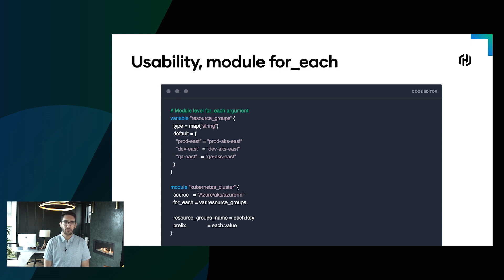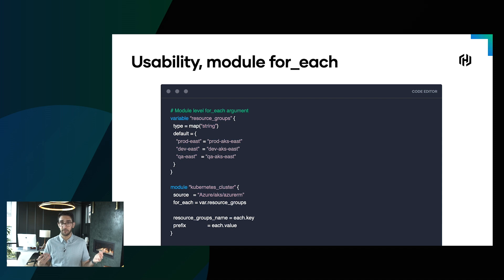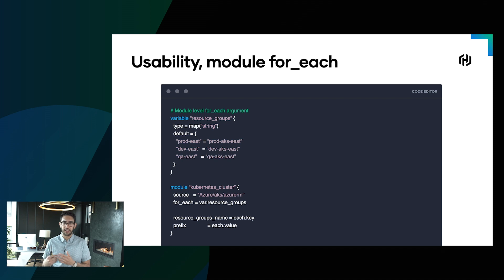In that same vein, we're also adding support for the for_each expression on top of modules as well. While count might enable us to do relatively simplistic expansion into multiple counts of modules, for_each allows for more complex logic. Maybe we have a key-value mapping of things, or we need some logic being applied depending on which instance it is, and for_each gives us that flexibility and power.